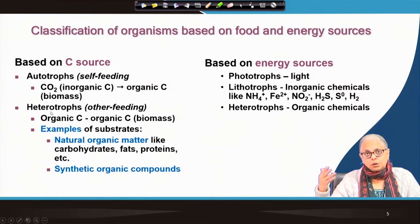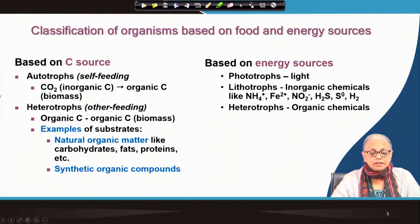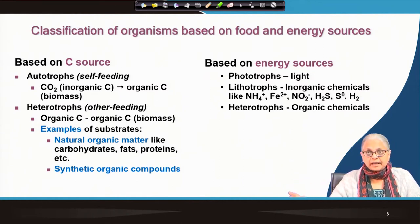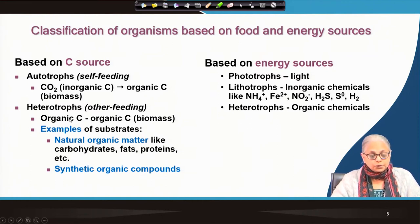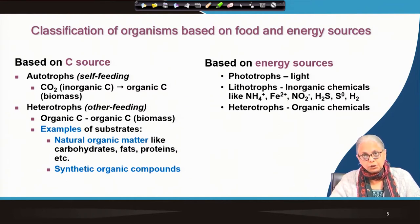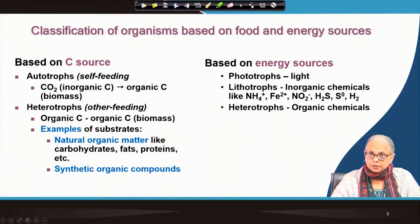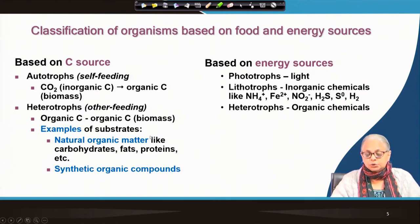Heterotrophs, in contrast, feed on other organisms. They utilize organic carbon generated either by autotrophs or by other heterotrophs. For example, we are heterotrophs — we feed on organic matter created by autotrophs or other heterotrophs. We ingest food and convert it to new biomass.